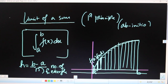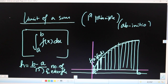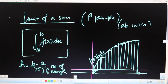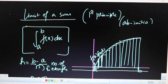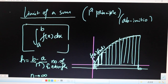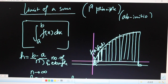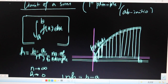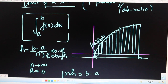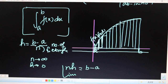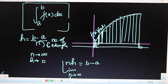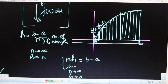Everyone knows that 'a' is the lower limit and 'b' is the upper limit. 'h' is very crucial — h is the width. There are rectangles of equal width and there are n rectangles. The area of a rectangle is length times breadth. We assume there are n tending to infinity rectangles — unlimited, infinite rectangles — and as you increase the number of rectangles, the width will decrease.